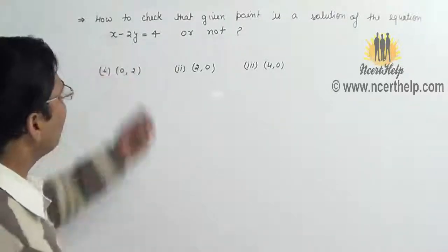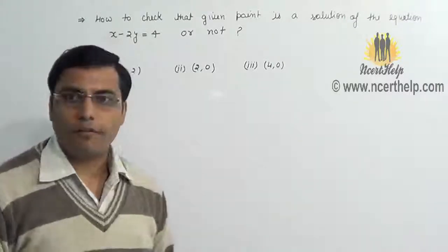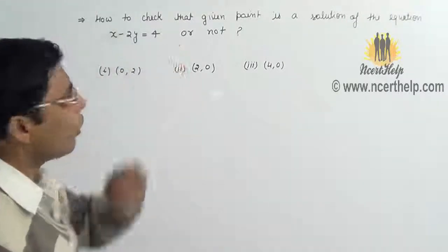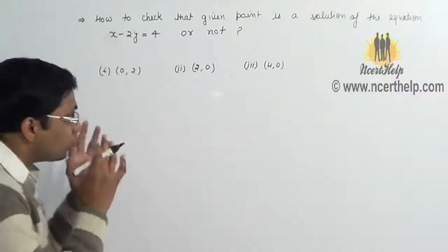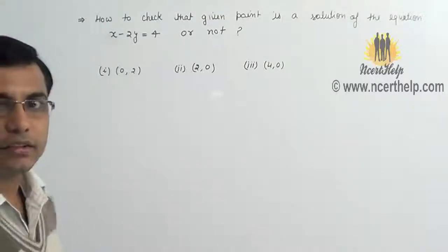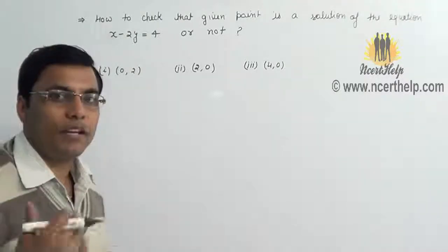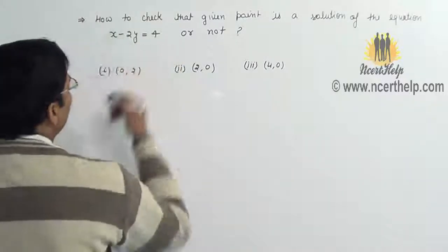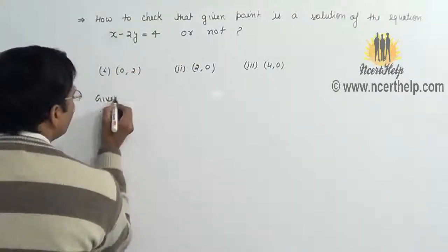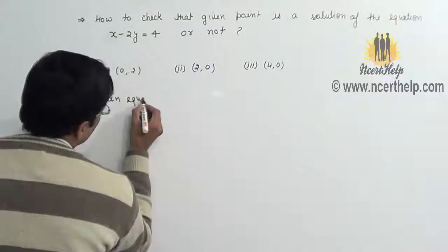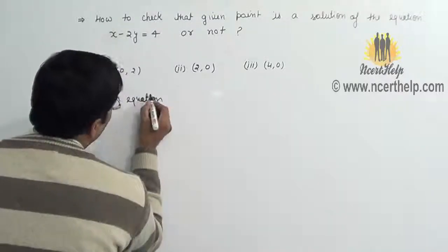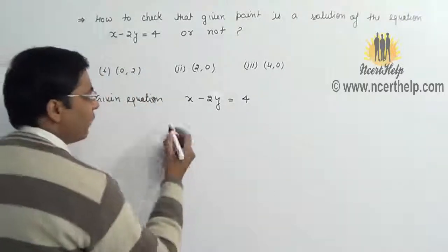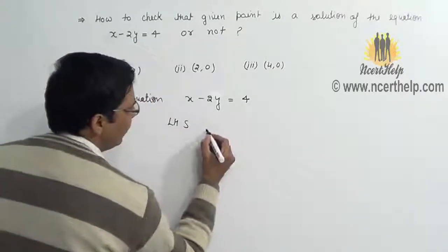In this video you will learn how to check that a given point is a solution of the equation x minus 2y equals 4 or not. To check whether a given point is a solution, we simply plug the value of X and Y into the given equation. Our given equation is x minus 2y equals 4. Take the left hand side of the equation, LHS, which is x minus 2y.